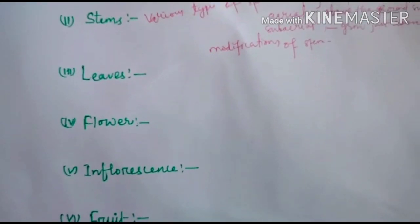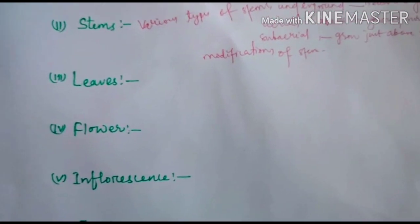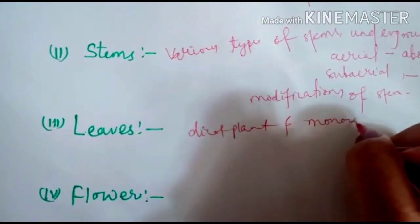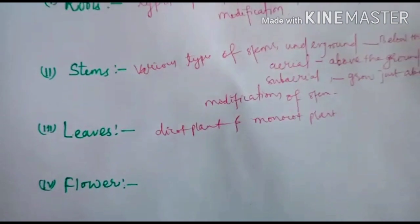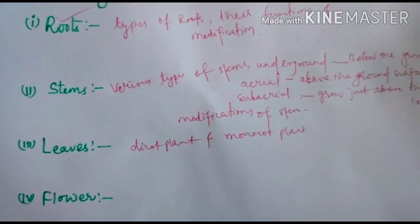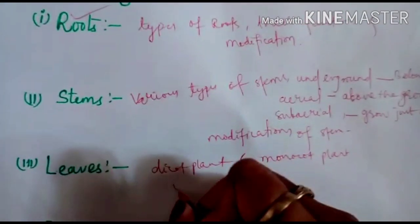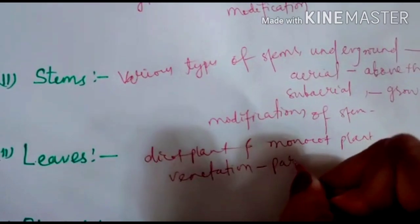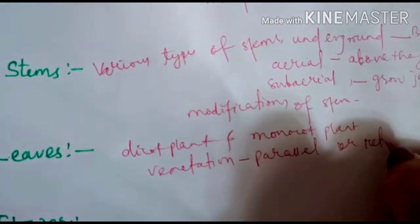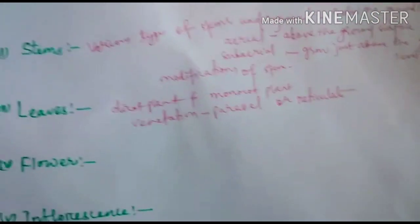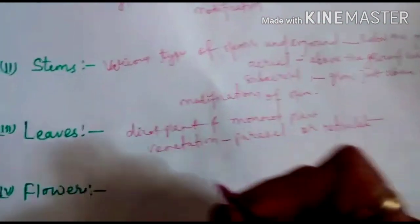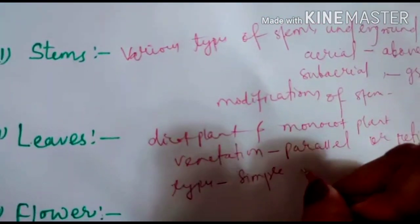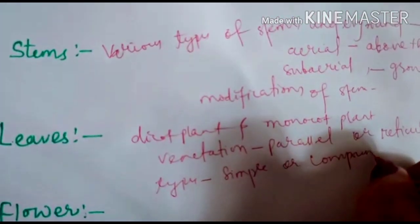Then the leaves — here we will discuss the leaves of dicot plants and monocot plants. We will also look at venation, meaning whether it is parallel or reticulate venation, and the types of leaves, whether they are simple leaves or compound leaves.